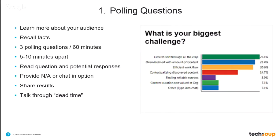It's also important to talk through the dead time. If I ask 'what is your biggest challenge?' and list all the responses, I'm still going to give participants the opportunity to think and answer. As responses come in, I might say, 'Wow, we've got some fast fingers — looks like a lot of people are overwhelmed or have a problem with efficient workflows.' So there's no dead time. It's also good to give people a timeline: 'I'm about ready to close the poll — five, four, three, two, one — closing the poll and sharing the results.' Polling questions are one of the best ways to engage your audience, especially in longer webinars.